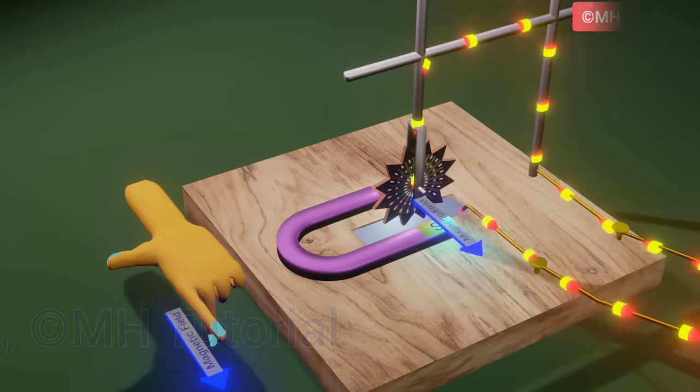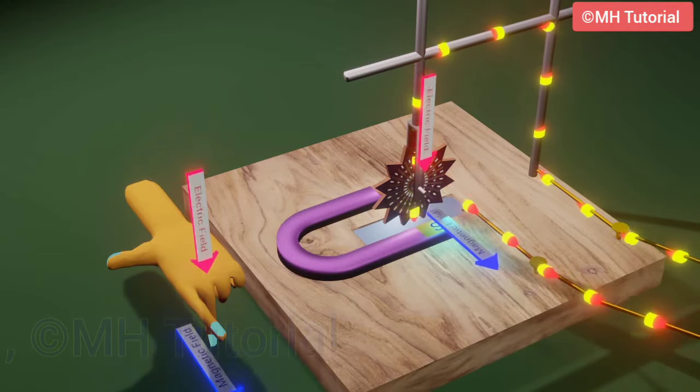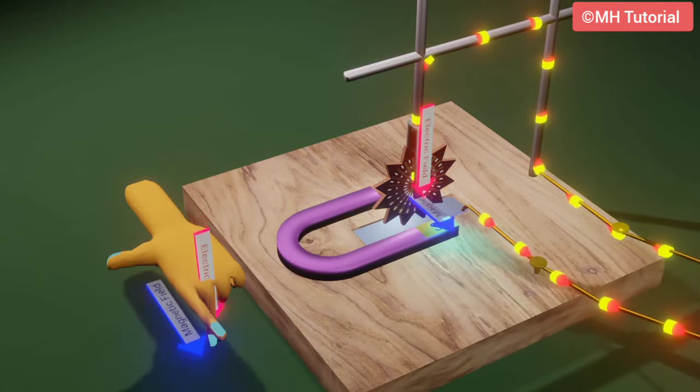The current is flowing along the middle finger, which is downward now. The two red arrows indicate the electric current.